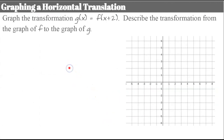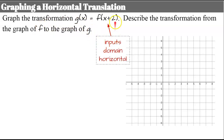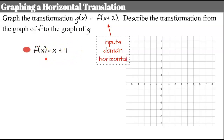Let's graph a horizontal translation. We're going to graph the transformation G when function F has been transformed by changing its input from X to X plus 2. Then we'll describe the transformation of the graph of F to the graph of G. This is a horizontal translation because it's affecting the inputs, our domain. Our function F is the line X plus 1, which we'll graph in red — y-intercept of 1 and a slope of 1.